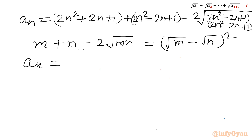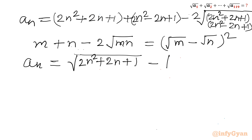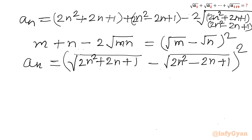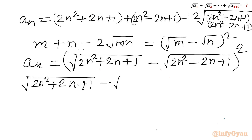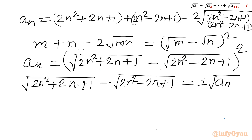So aₙ equals (√(2n² + 2n + 1) − √(2n² − 2n + 1))². Taking square roots of both sides, √aₙ equals plus or minus (√(2n² + 2n + 1) − √(2n² − 2n + 1)). For n ≥ 1, the first quantity is greater than the second, so subtracting a smaller from a larger gives a positive result.